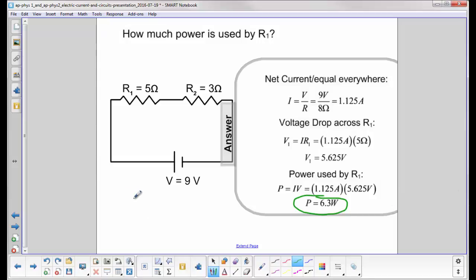Yes, there was. We could have used the equation power is equal to I squared R. The current is 1.125. We could square that and then multiply that by 5. And go ahead and check for yourself. We will still get 6.3W.